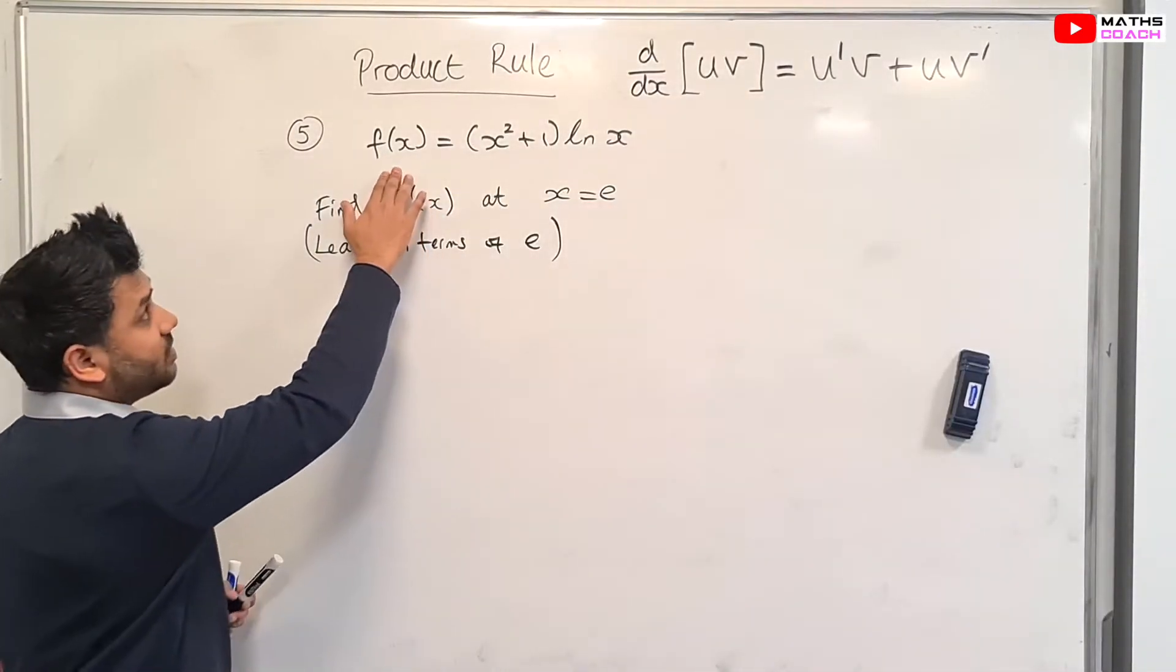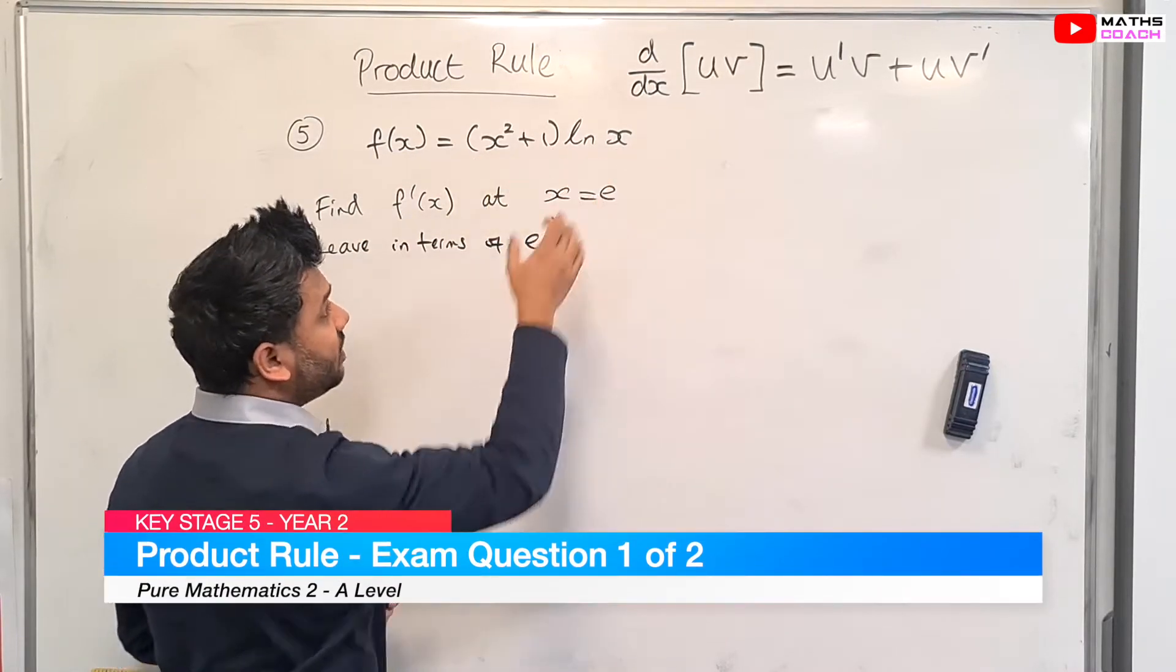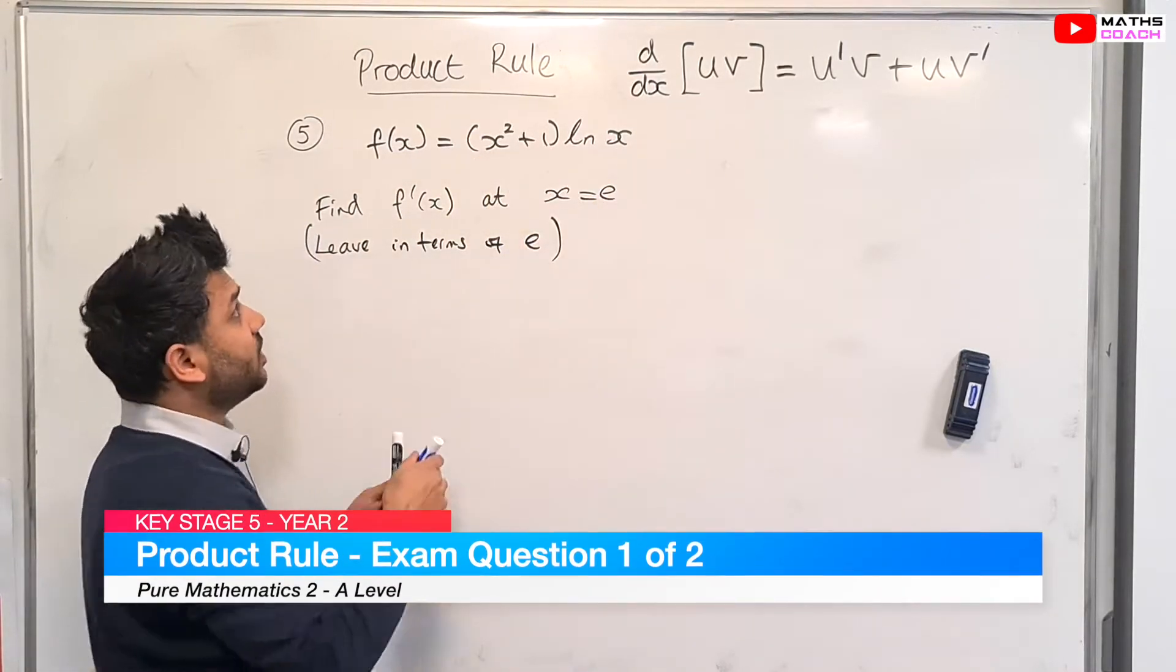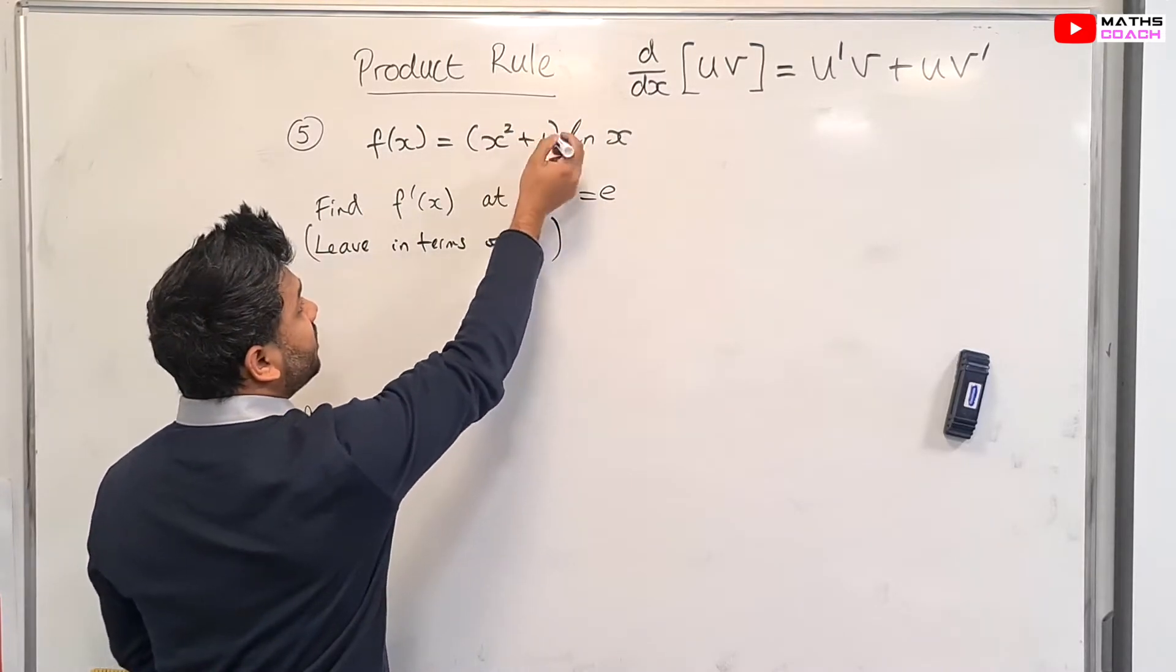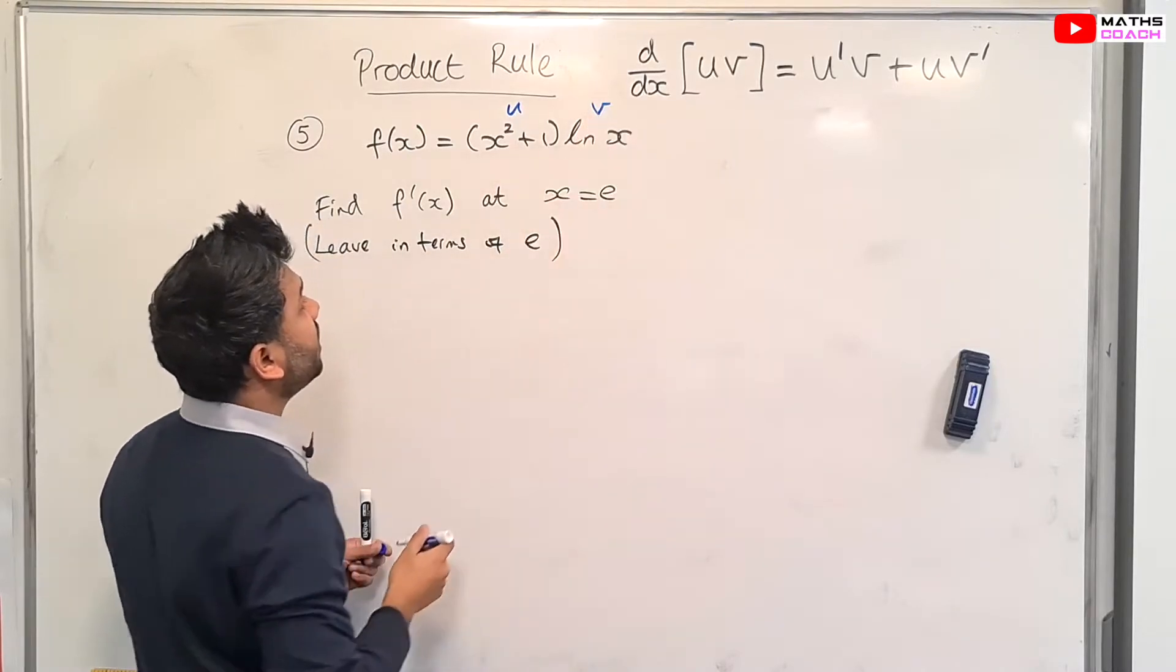So f(x) is defined as, in the bracket we have x squared plus 1 multiplied by the ln function. So the left side of the function, let's call that u, and the right side, which is ln x, let's call this one v.